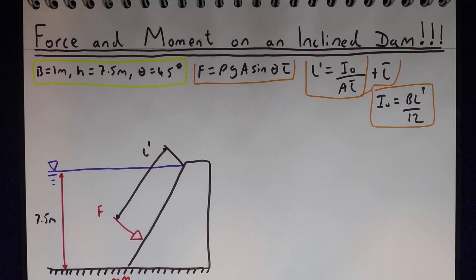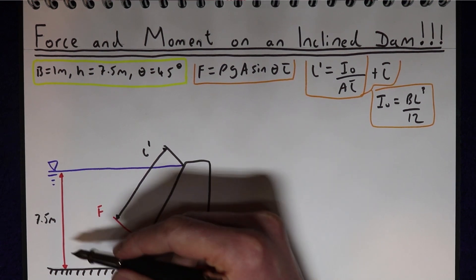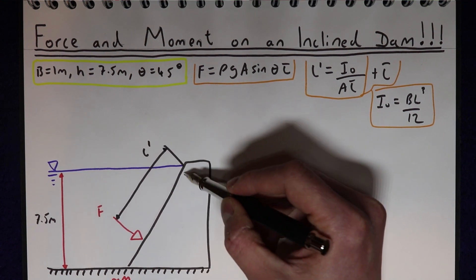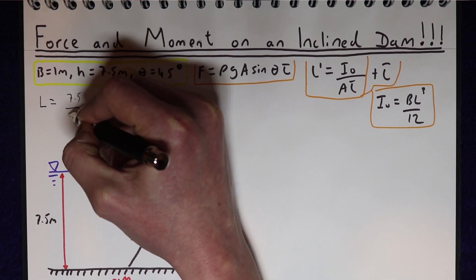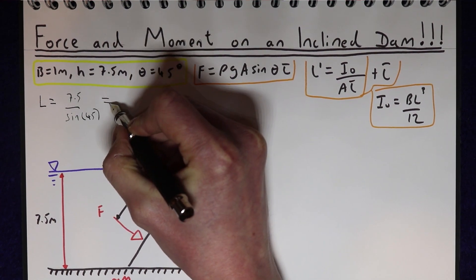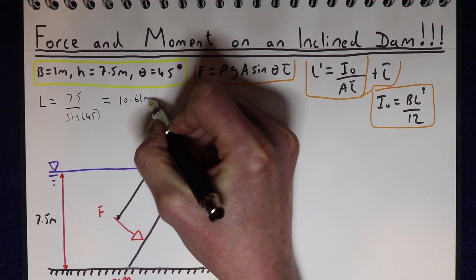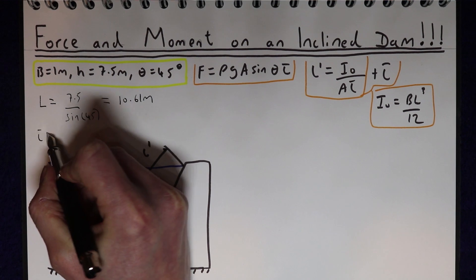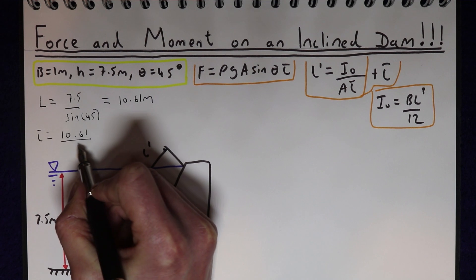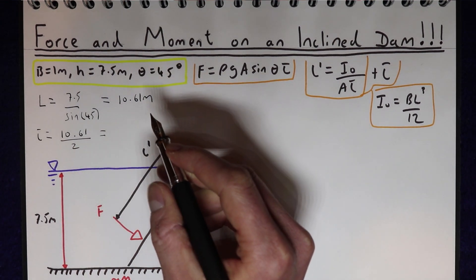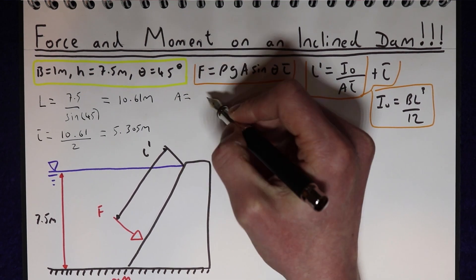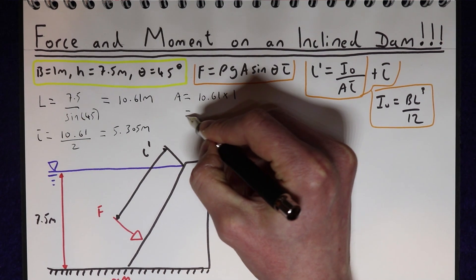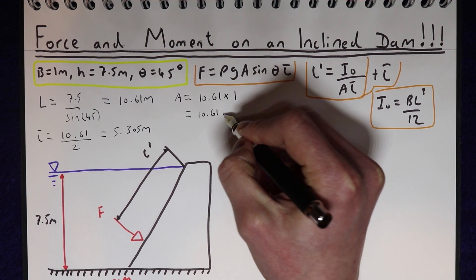First we need the area of the surface, which requires the total length along the dam face. We have the vertical water depth, so using trigonometry: L = 7.5 / sin45° = 10.61 metres. From that, L̄ = 10.61 / 2 = 5.305 metres. The area is the total length times the width: 10.61 × 1 = 10.61 m².